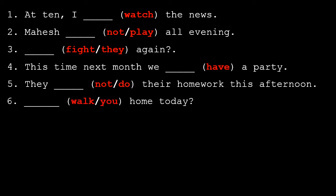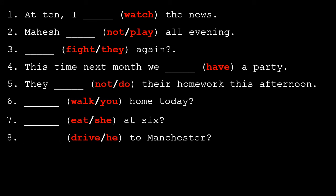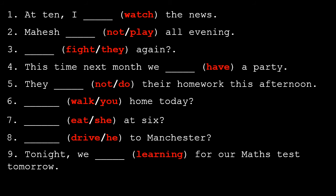Number 6: [Walk] you home today? Number 7: [Eat] she at 6? Number 8: [Drive] he to Manchester? Number 9: Tonight, we [learn] for our maths test tomorrow. Number 10: At midnight, he [sleep]. Children, you have to see the verbs given in the brackets and use them accordingly. You may use only and only the future continuous tense.